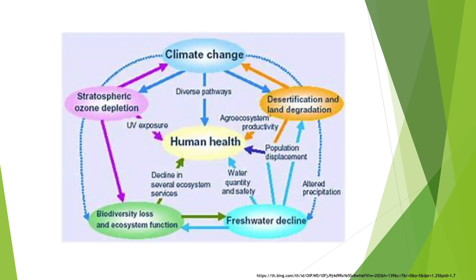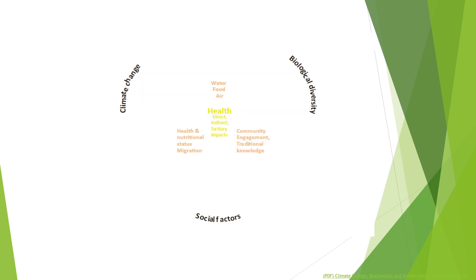Biodiversity provides numerous ecosystem services that are crucial to human well-being at present and in the future. Climate change is an integral part of ecosystem functioning, and human health is impacted directly or indirectly by the result of climatic conditions upon terrestrial and marine ecosystems. This figure shows how human health is directly or indirectly affected by climate change, desertification and land degradation, freshwater decline, biodiversity loss and ecosystem function, and stratospheric ozone depletion. Health is directly, indirectly and tertiarily affected by climate change, biological diversity and social factors.